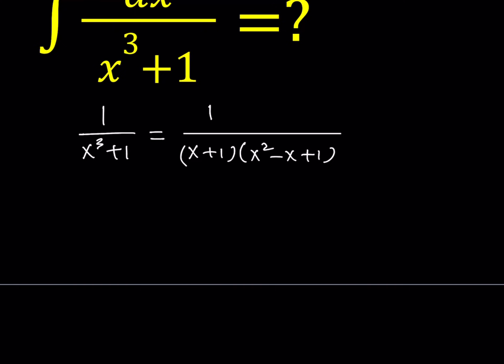Now what I'd like to do is separate these into two fractions — write it as a sum of two fractions. But we have to pay attention to the factors in the denominator: we have a linear factor and a quadratic factor. The quadratic factor is not factorable; if you set it equal to zero, it has no real solutions. Its discriminant is less than zero.